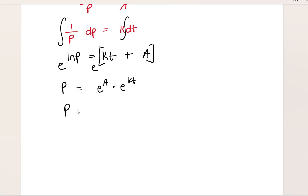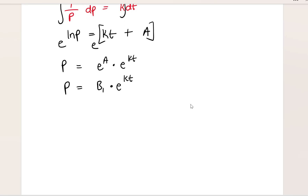A constant raised to a constant is just another constant, so I can replace e to the power of A with a different constant — call it B1. So now P equals B1 multiplied by e to the power of kt. This is our model. Now we need to solve for B1, since we don't know what it is.